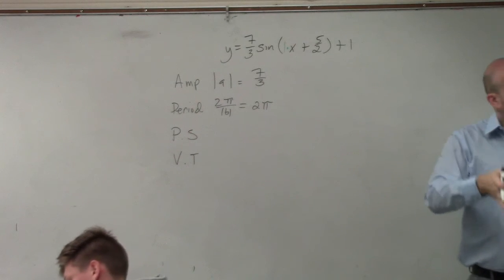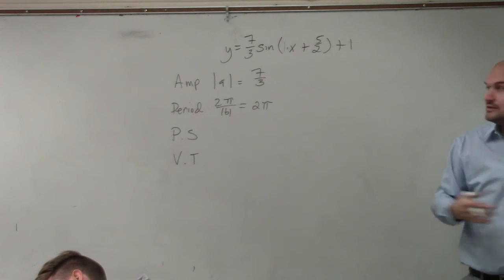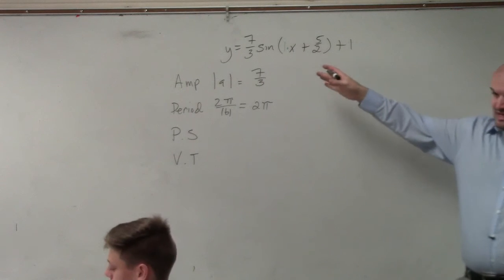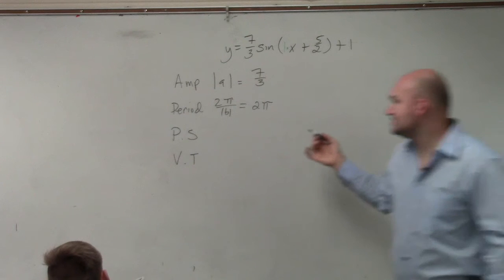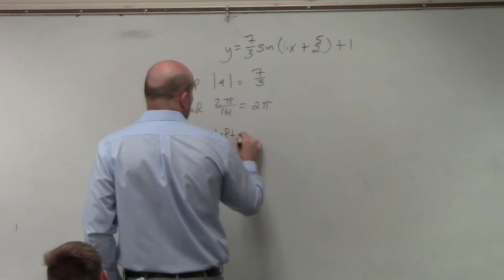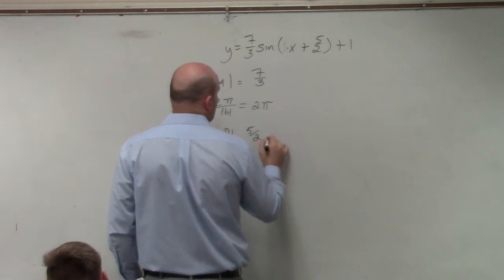The phase shift is going to be our vertical—or I'm sorry, our horizontal translation. You can see here b is not greater than or less than 1, it is 1. So therefore, I can just say the phase shift is left 5/2.